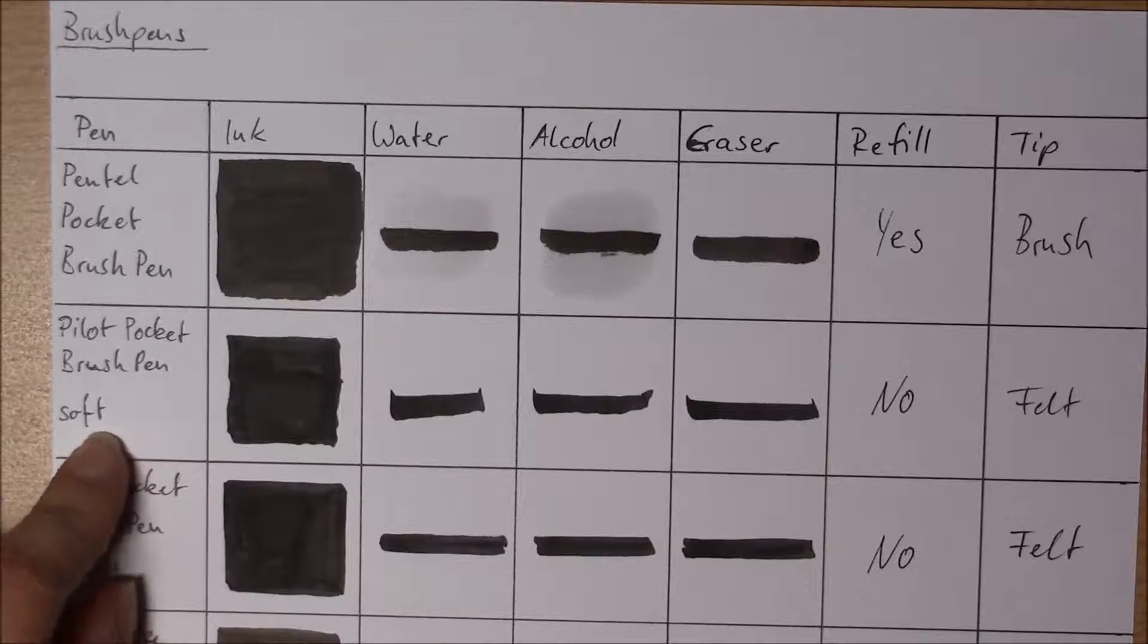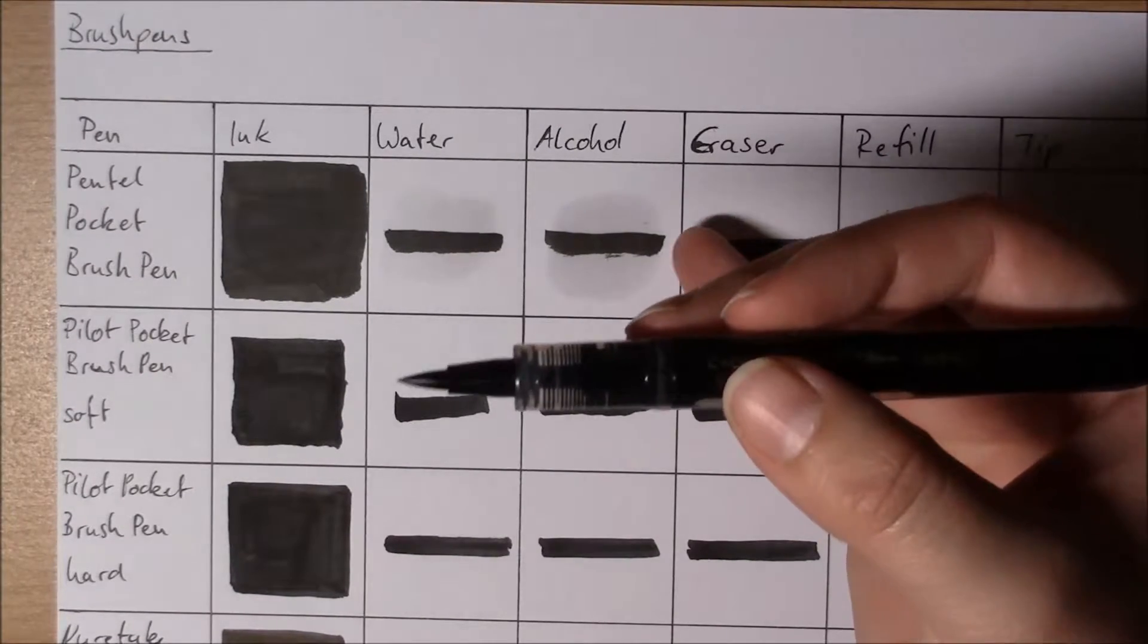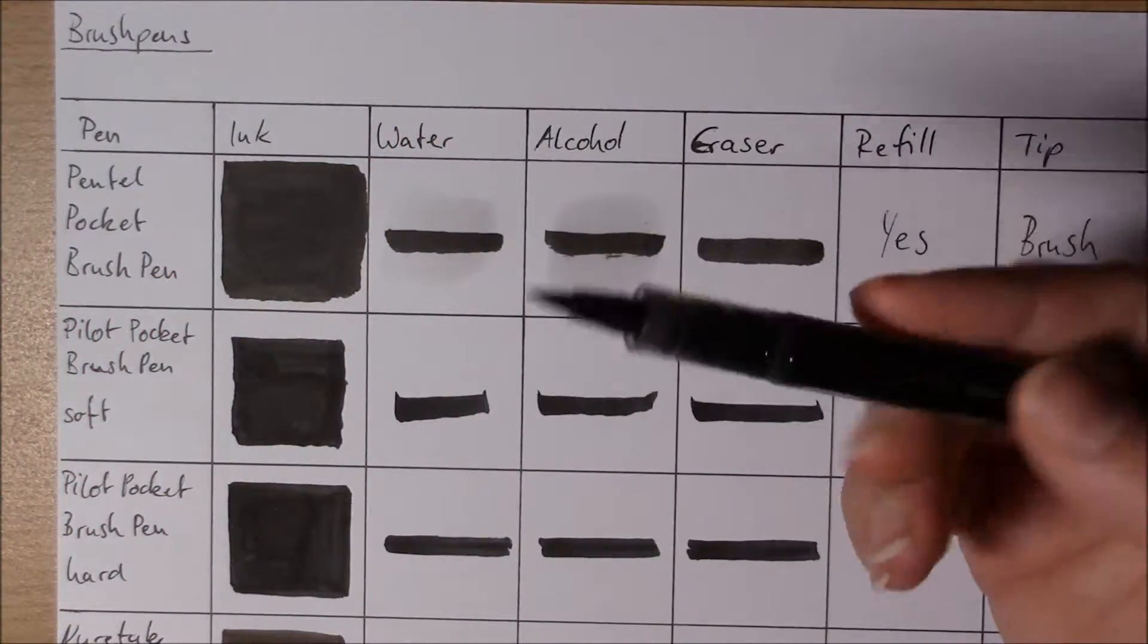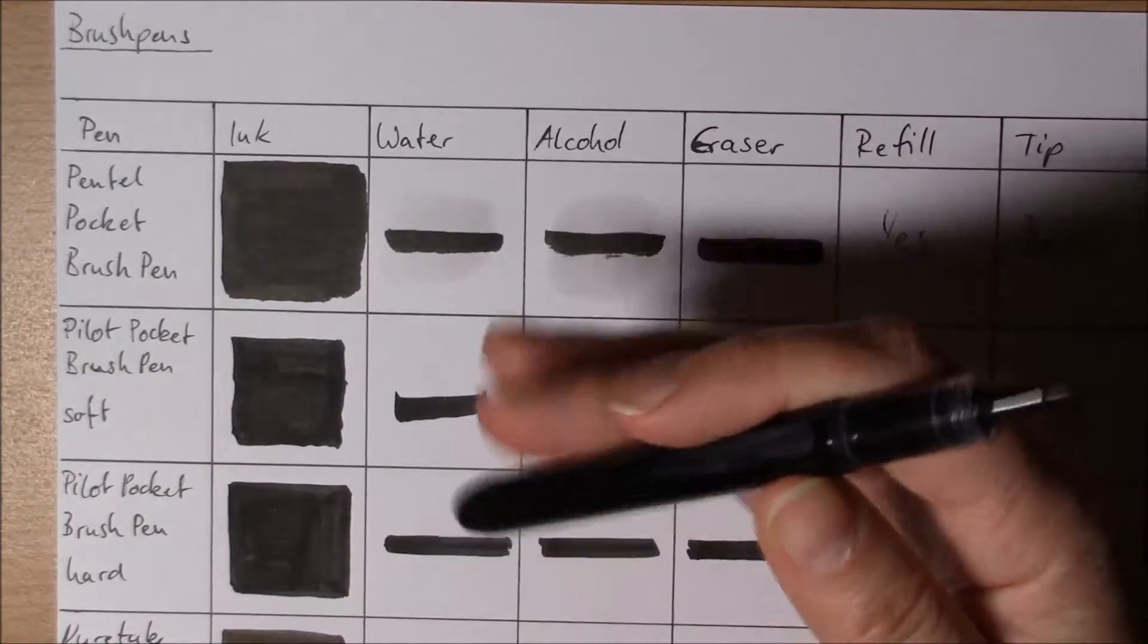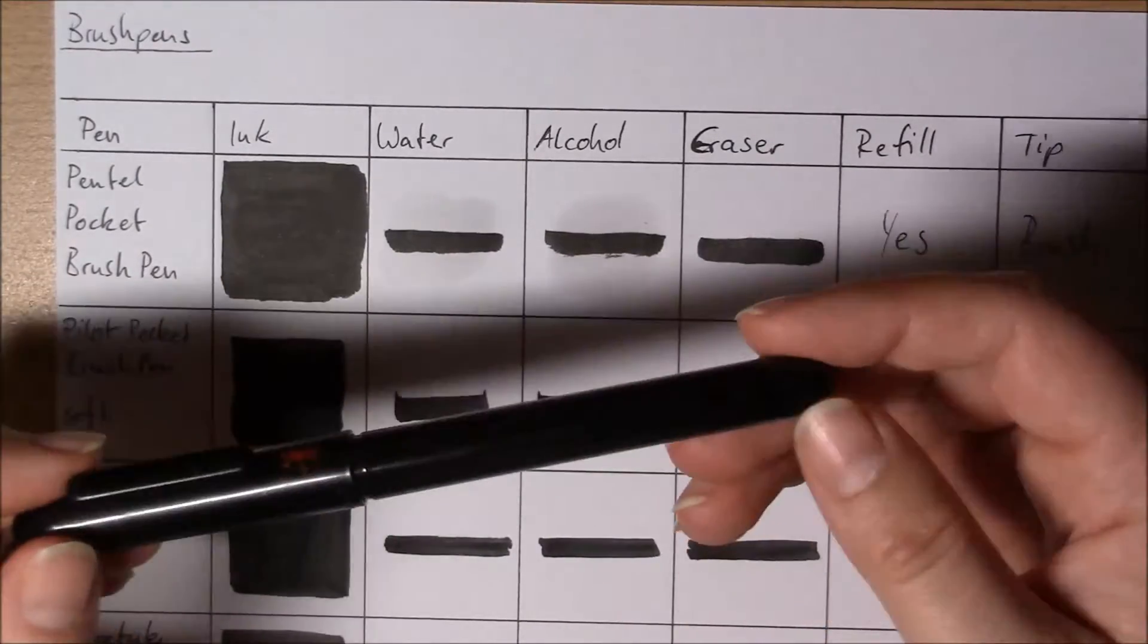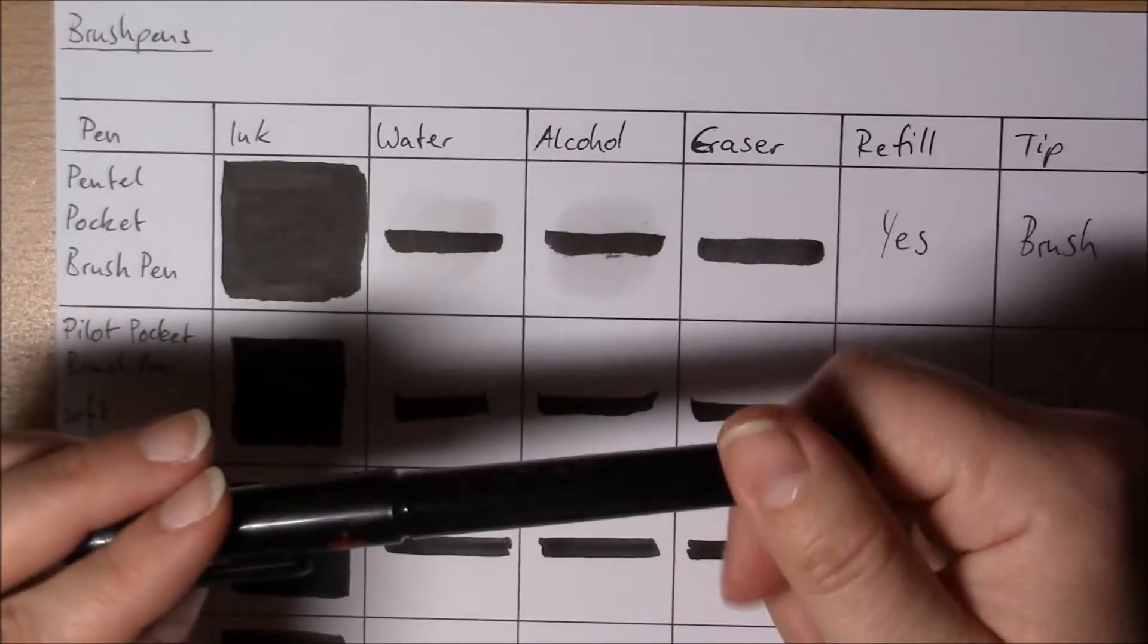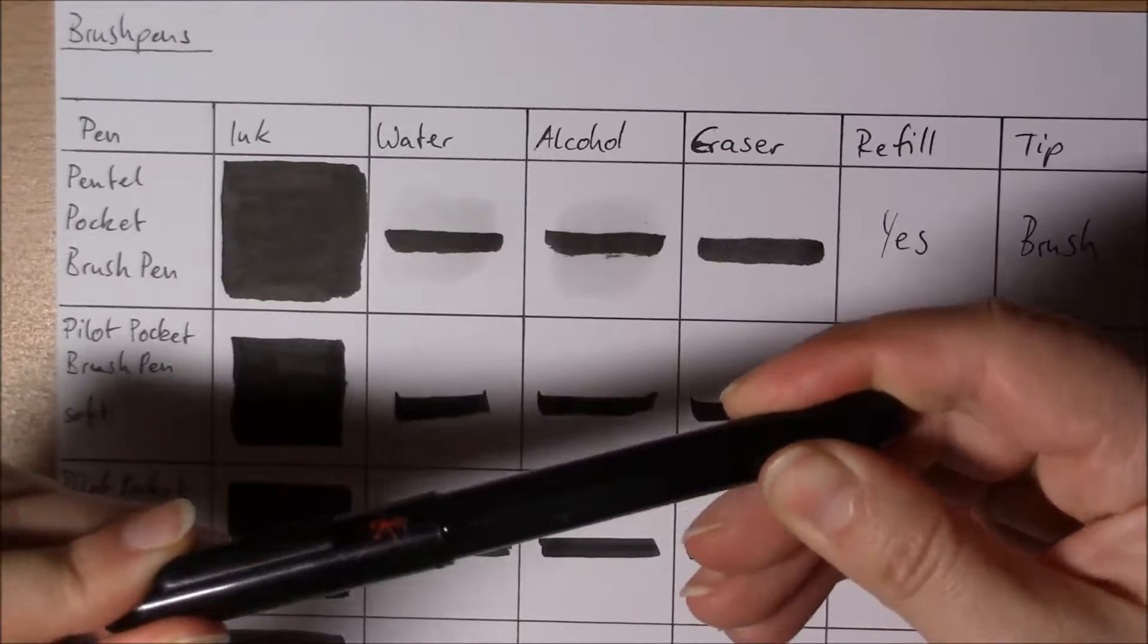And now to the Pocket Brush Pen in Soft. Like I said, the ink is a bit different from the hard one. It has a felt tip and there are no refills. So if it's empty, it's empty. Well, you could try to refill it. I'm going to try it. It's still a bit ink in here, but I will show you the results when I'm trying to refill it.